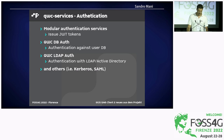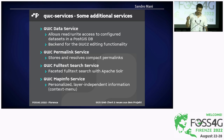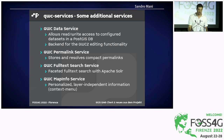Authentication is an interesting topic. The mechanism is modular — the requirement is that authentication services issue JWT tokens, and the actual implementation of how they authenticate can vary depending on requirements. We provide a database authentication service that authenticates against users stored in a database. There's LDAP Active Directory authentication and also other possibilities like Kerberos and SAML. The data service is the main backend for editing functionality, allowing read-write access to geodata stored in a PostGIS database. There's a permalink service for storing compact permalinks, a full-text search service using Apache Solr, and the map info service for right-click context information.